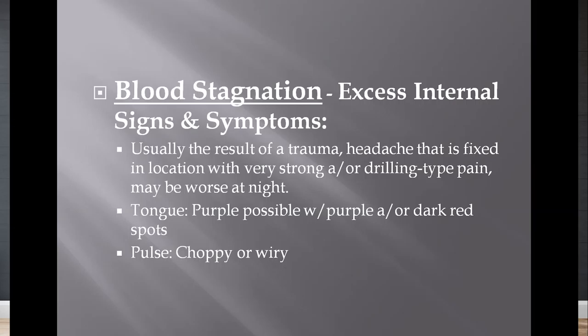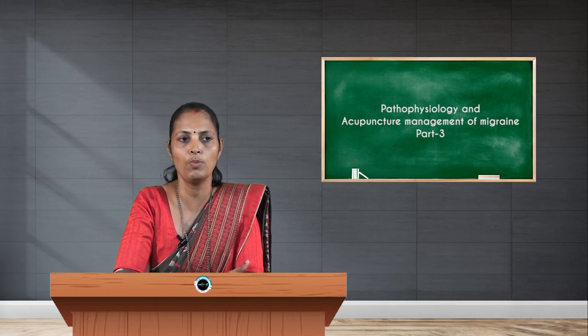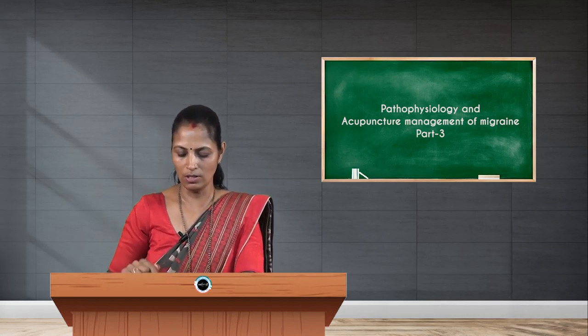Blood stagnation: this usually occurs due to any trauma. The headache is fixed in location with a very strong or drilling type of pain, possibly focused to a local area, which may worsen at night. The tongue is purple — possibly with white-purple or dark red spots seen on the tongue.